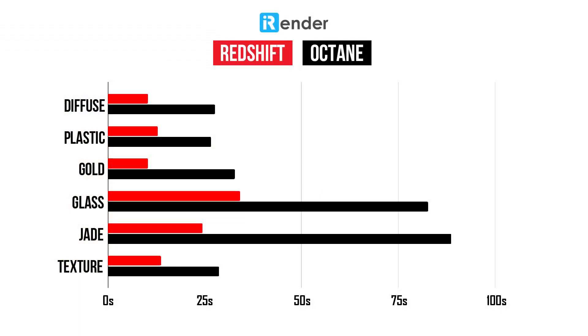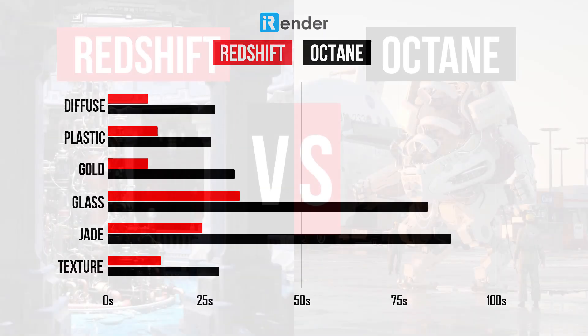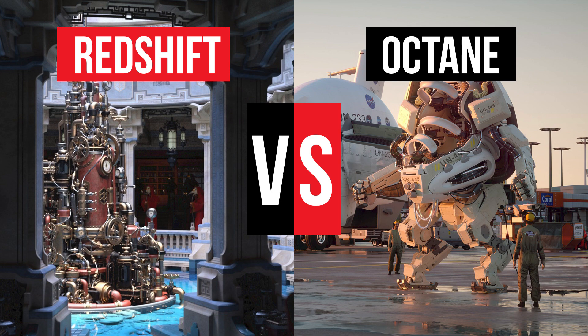In conclusion, in terms of speed, Redshift totally won. If you think you can improve the time with better settings, you're right — an experienced Octane artist could reach the same speed as Redshift. But at the same time, an experienced Redshift artist could also reduce their render time further. So remember, these are the base speeds you should expect before optimization. There are a lot more elements we need to check to find out what render engine is best for you. That's the end of the video — thank you for watching. We'll see you in the next video. iRender — happy rendering!